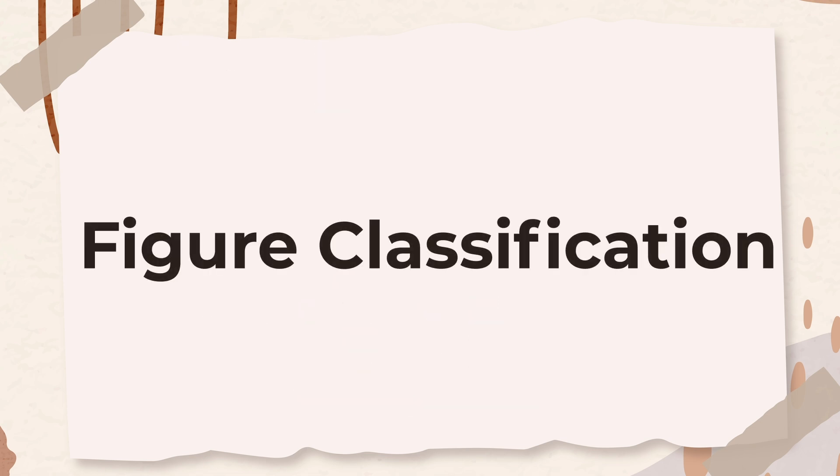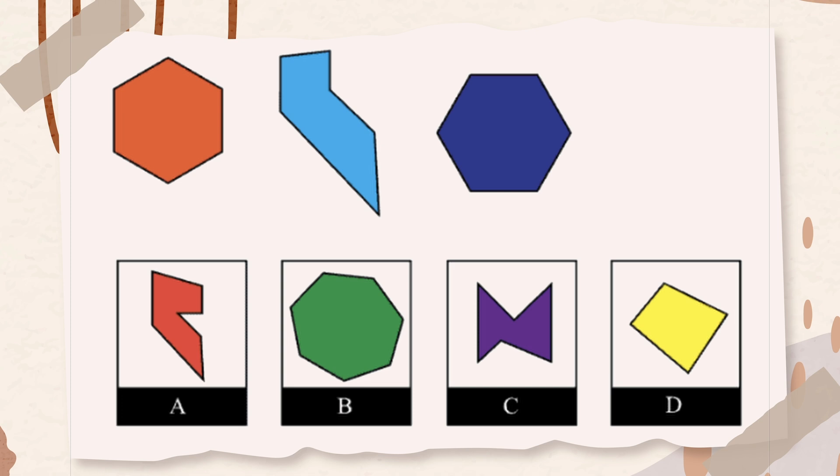The next subtest is figure classification. In this question, the first three figures are alike in some way. Choose the figure from the answer choices that goes with the first three figures. In this question, all the geometric figures are hexagons, which are shapes with six sides. Therefore, the correct answer is option C, which is also a shape with six sides. The other answer choices are shapes with either seven or four sides.